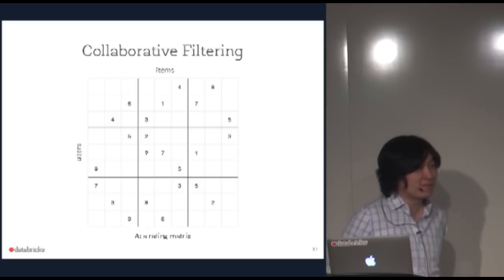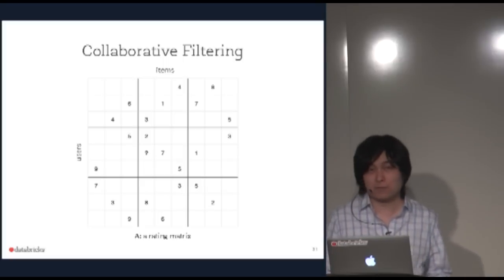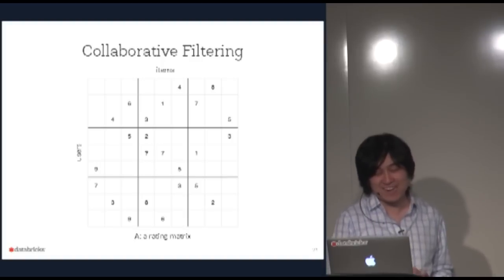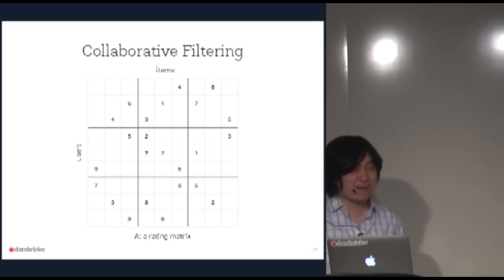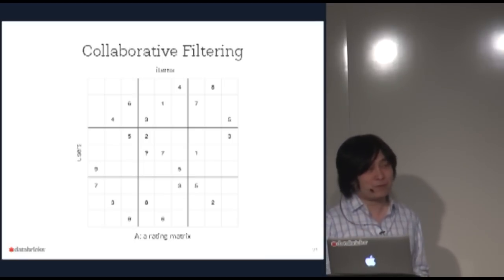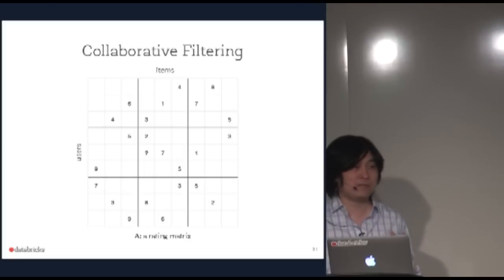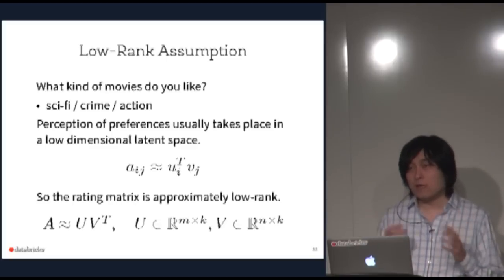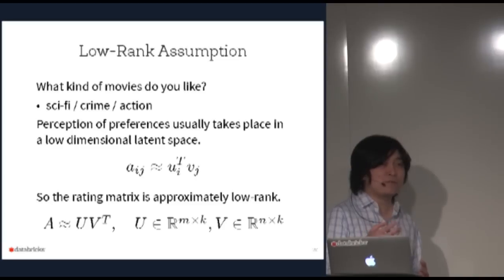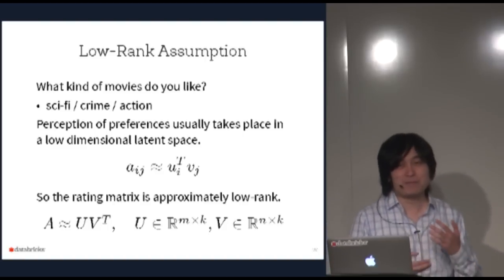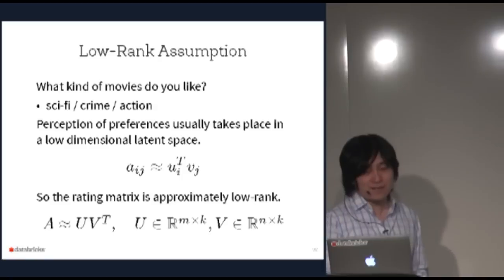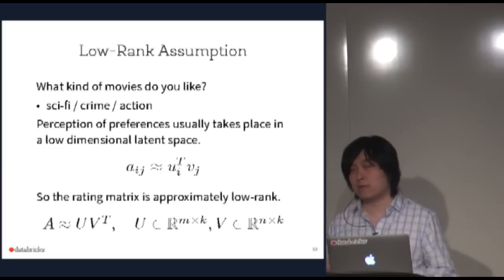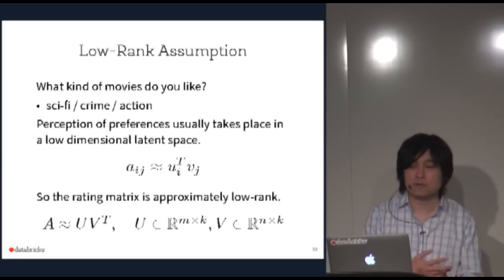To reconstruct the matrix we need assumptions. The key assumption is the low-rank assumption: if someone asks what kind of movie you like, you describe preferences in a lower-dimensional latent space, like 'sci-fi' or 'crime action.' We map both users and movies to this latent space and use the inner product to estimate ratings. The rating matrix A is approximated as U times V^T, where each factor matrix has rank K.